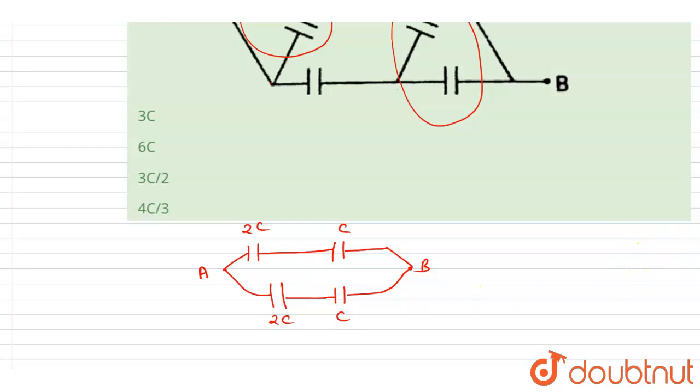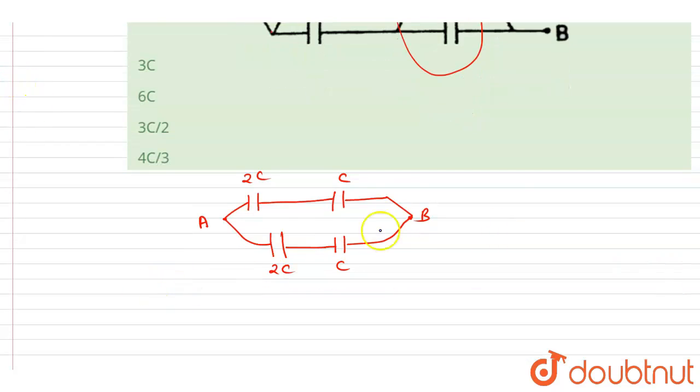Now if you see, 2C and C are connected in series, so you can get the equivalent capacitance of these two.